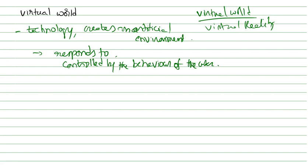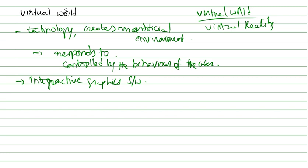Virtual world is created using interactive graphics software — specialized software. For example, the Bahubali movie is a virtual environment; those types of castles will never exist, but such an environment is shown to us. It is a computer-generated artificial environment that can be shared by more than one person or even a large group, like the PUBG online game.